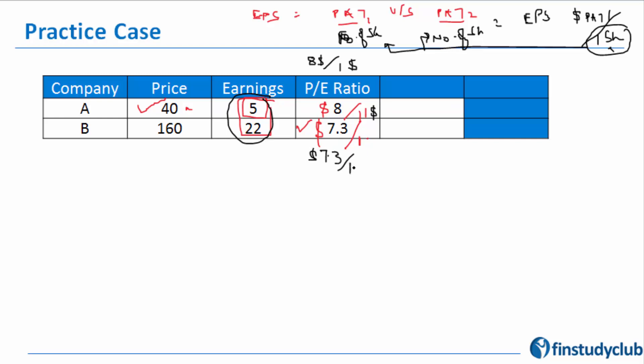How do you read a PE ratio of 8 times? It's $8 of price per $1 of earnings, and similarly $7.3 of price per $1 of earnings. While $40 and $160 were not comparable, 8 and 7.3 are comparable because both are at $1 of earnings. So we said, let's select B.